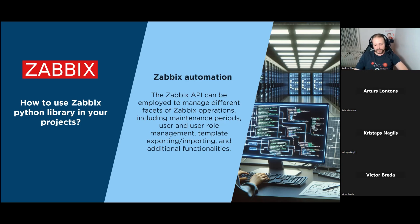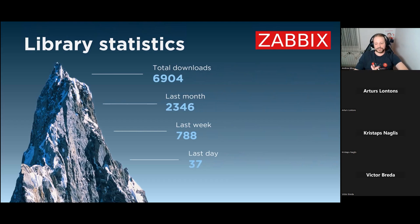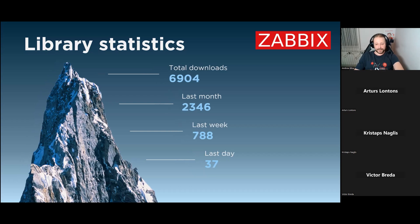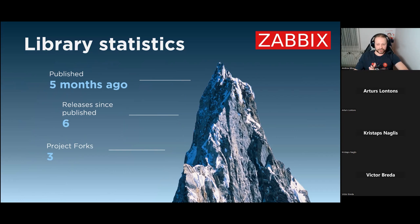A little bit of statistics: since we released the library we have about 7,000 downloads, and this number is growing. We hope more and more people will start using it over time. We're already noticing that forks are being created from our library, which means people like to use our code as a base for improvements - and it also means we have room for improvements as well. Since we published the library, we've had six releases fixing minor bugs, implementing new features, and improving existing code. The next release is really close as we finish our async functionality - maybe a week or so.